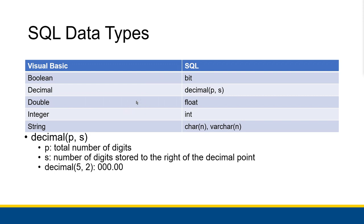The Visual Basic Double is represented by the SQL float data type — Double is a floating point data type. Integer in Visual Basic is represented as the int data type in SQL.